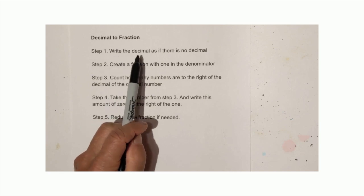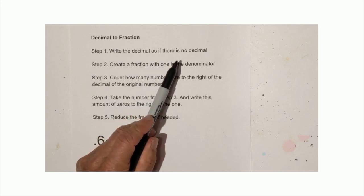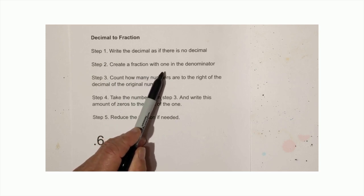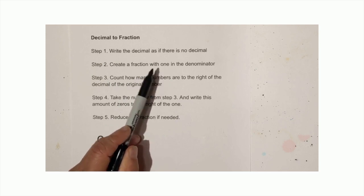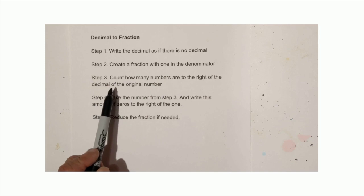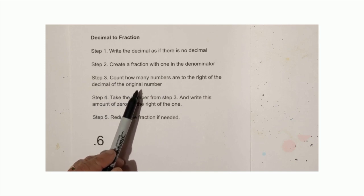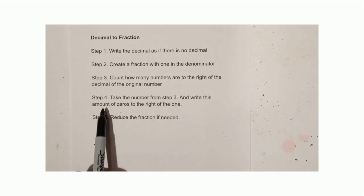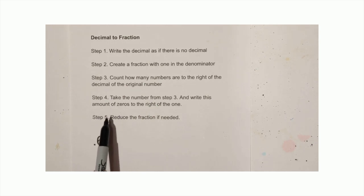First we're going to write the decimal as if there's no decimal — sounds weird. Then we're going to create a fraction with one in the denominator. Then we're going to count how many numbers are to the right of the decimal of the original number, and then we're going to take that number and write the number of zeros to the right of the one, and then we're going to reduce.